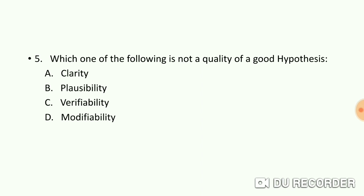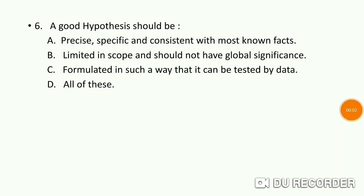Question number 6. A good hypothesis should be: Option A, Precise, specific, and consistent with most known facts; B, Limited in scope and should not have global significance; C, Formulated in such a way that it can be tested by data; and D, All of these. I hope the answer is clear. Option D, all of these.